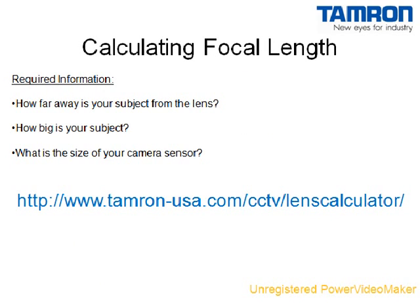In order to calculate the exact focal length you will need for your security application, you will need three pieces of information: the distance between the lens and the target you wish to capture, the physical size of your target, and the size of the imager in your camera. Once you have these three pieces of information, you can use the Tamron Online Lens Calculator to find an appropriate lens for your application. The Tamron Online Lens Calculator is located at the address shown here.